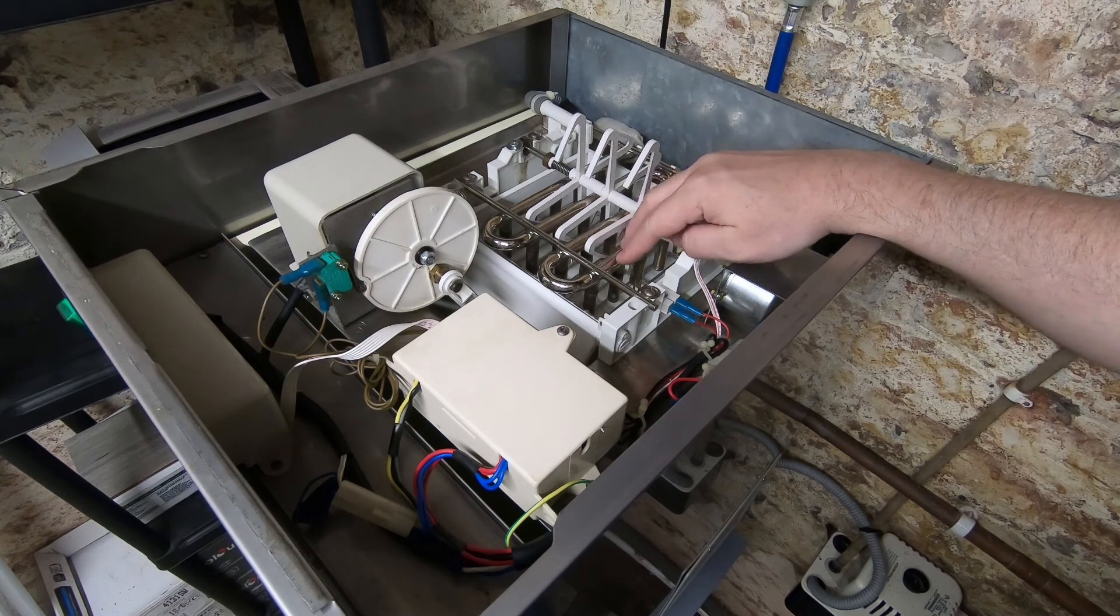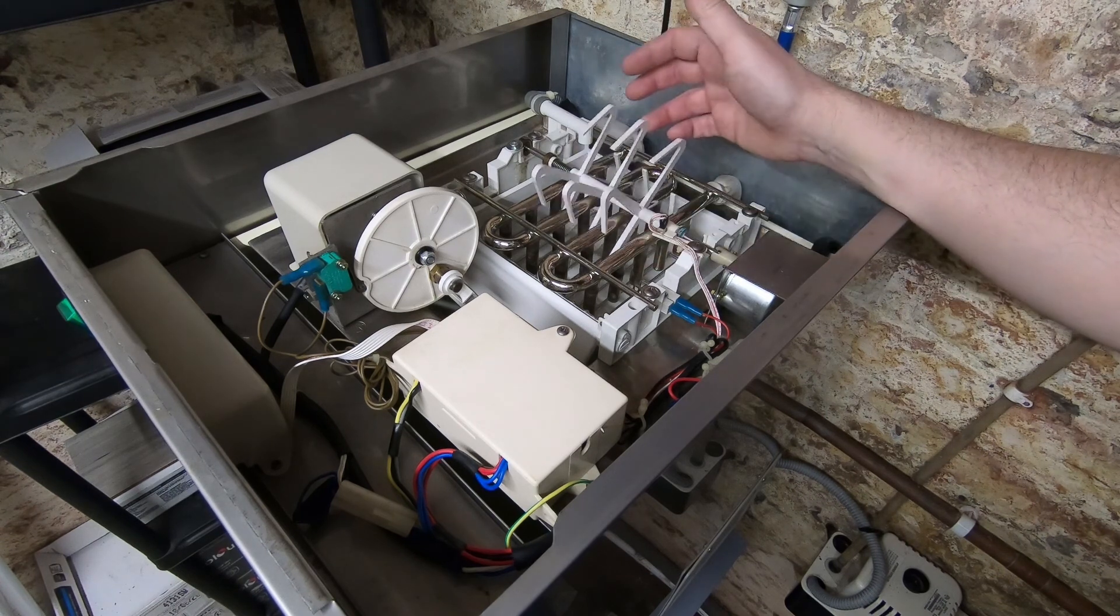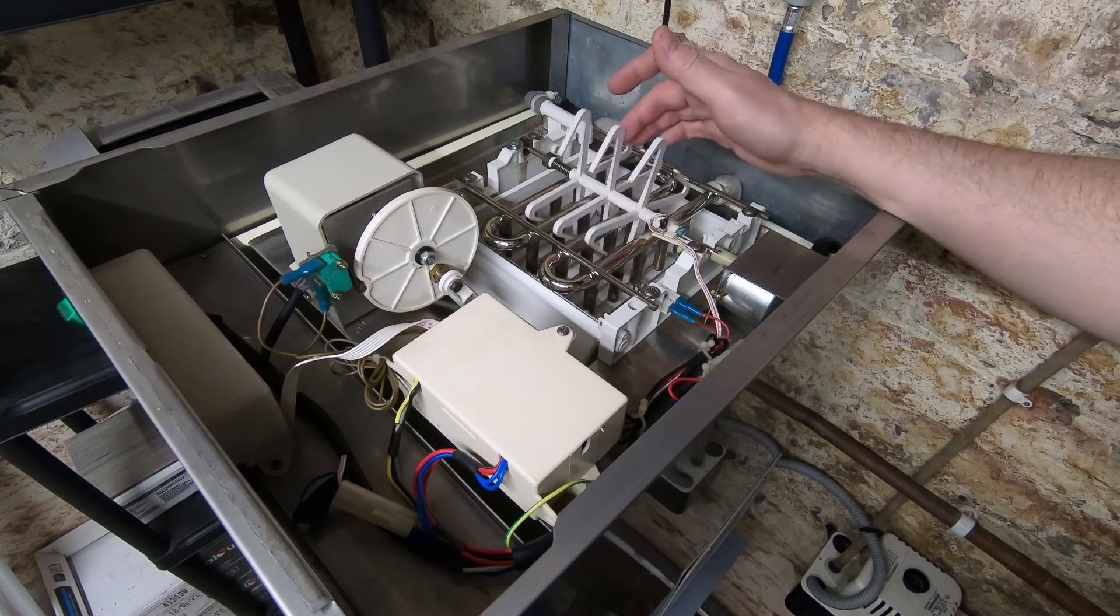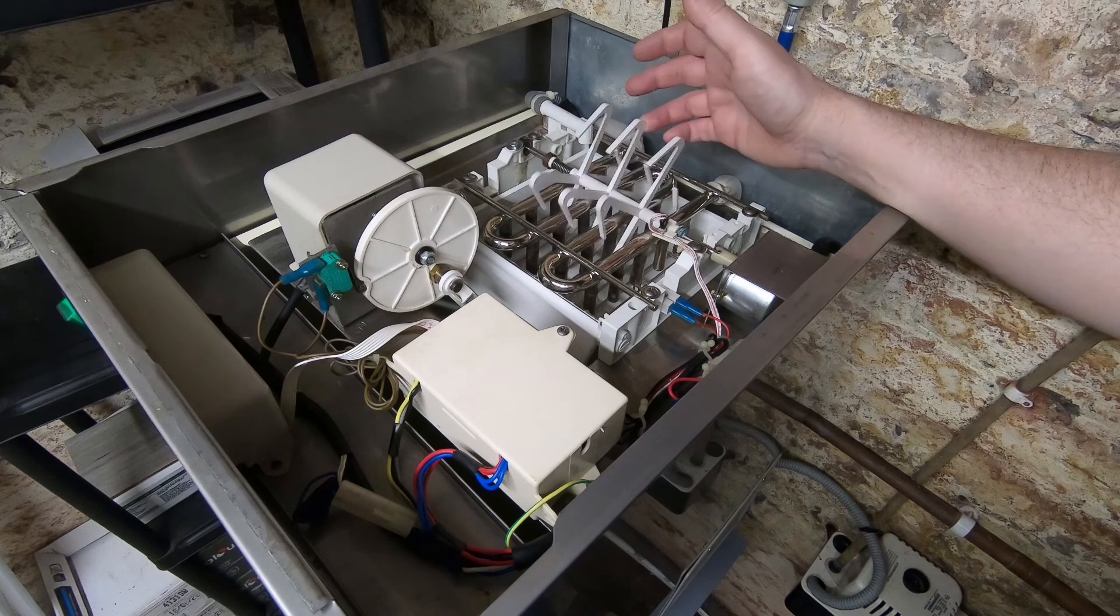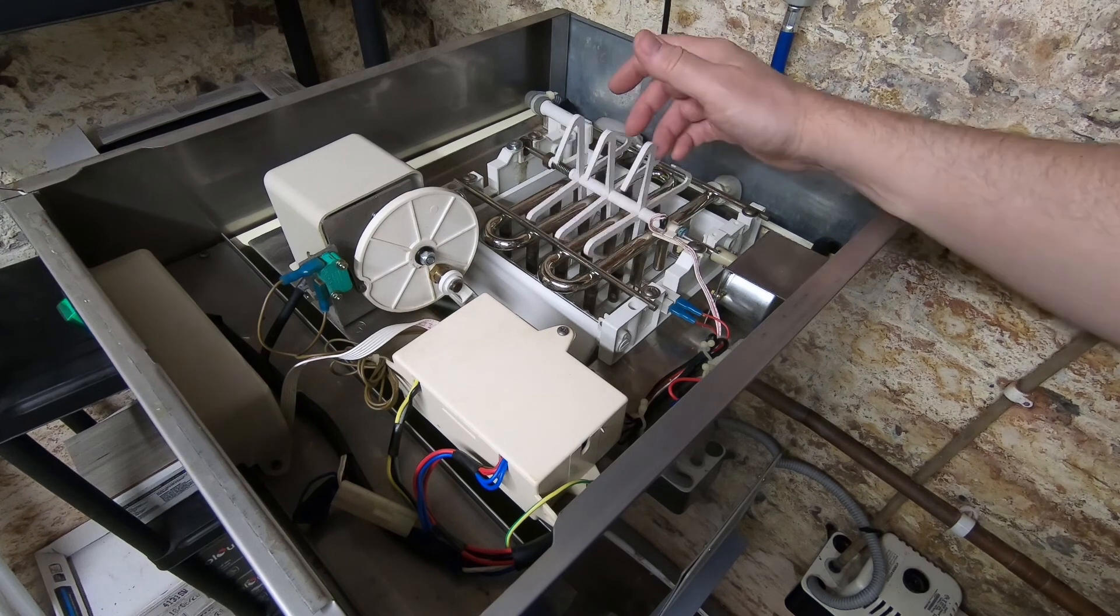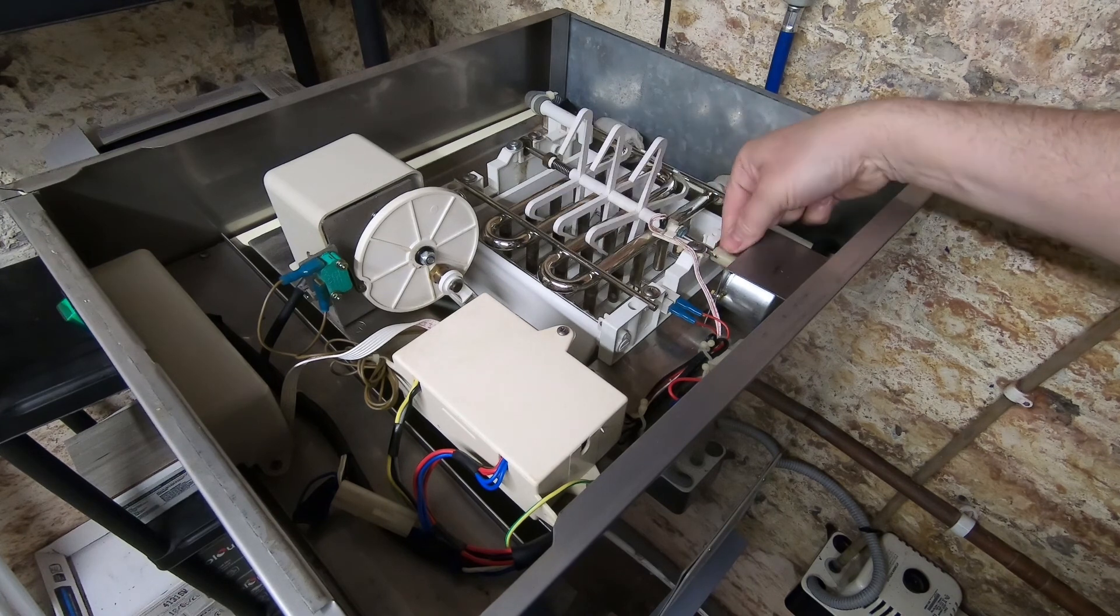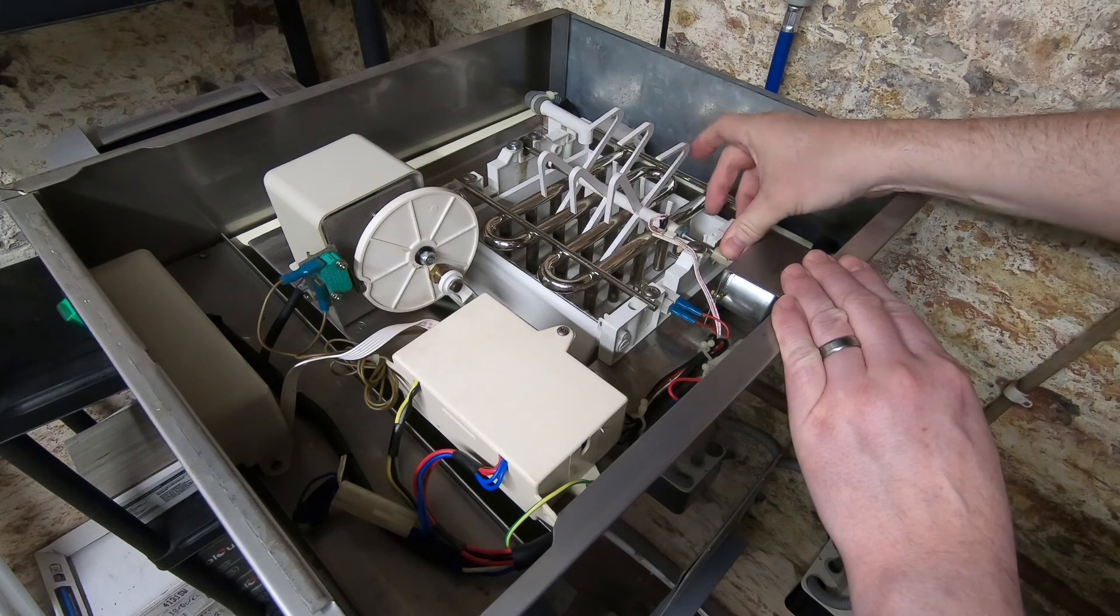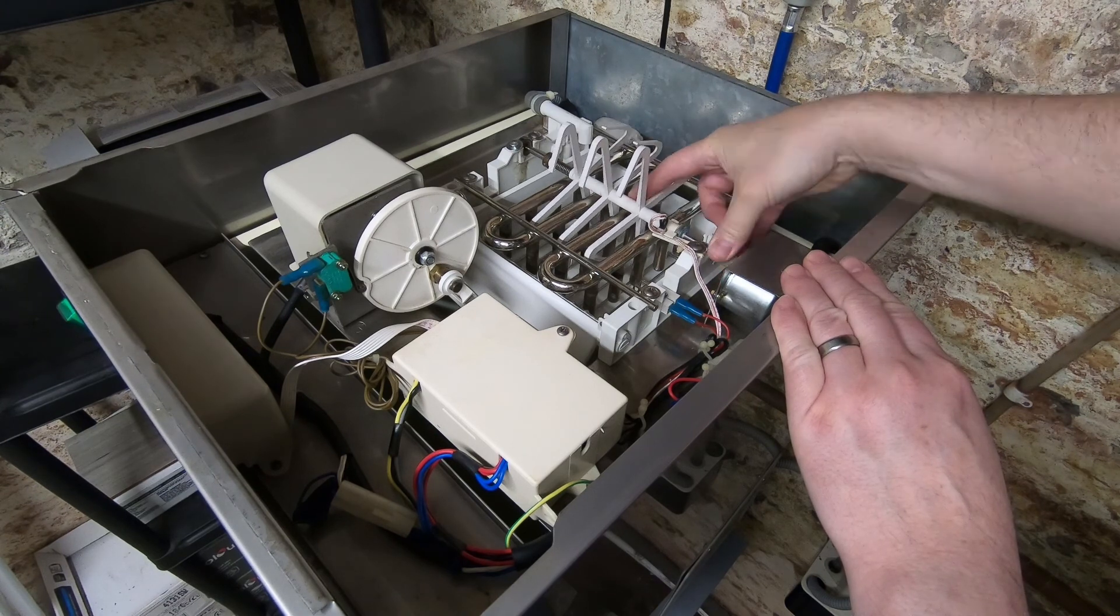So the way that this detects that the ice is ready to come off when the ice cubes have got large enough is using this plastic mechanism here. Now this spins round the whole time. I don't think that disturbing the water with this has any function. I think the only reason this exists is to detect the size of the ice. And the way it does that is there's a motor here that spins this round and it's got a clutch on here. So even though the motor is spinning, if this stops, it doesn't stop the motor spinning.